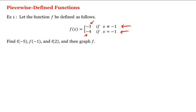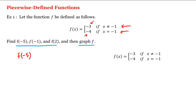So let's compute f, f, and f, and then we'll graph f. Let's start with f. Since negative 5 does not equal negative 1, we'll be using this first piece here. That is, f of negative 5 is equal to negative 3.